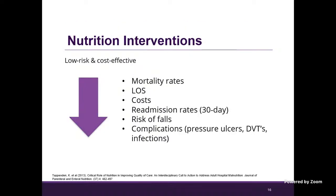Those nutrition interventions are low risk and cost effective. We know that they lower mortality rates, lower length of stay, and lower costs for the patient. They are associated with lower readmission rates, reduced risk of falls, and reduced complications — including reduced infections, reduced pressure ulcers, and reduced DVTs. There's a lot of data looking at specific populations and nutrition interventions such as enteral nutrition or TPN to examine outcomes more specifically.